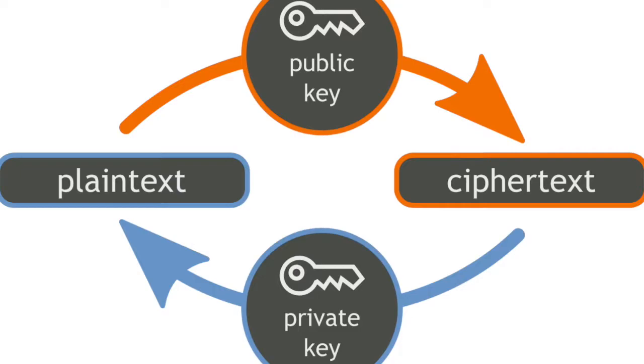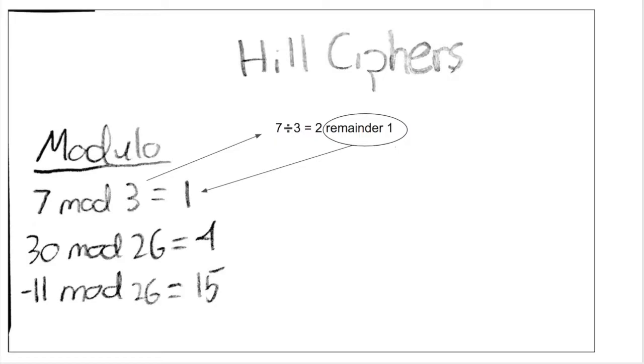The modulo operation is crucial to Hill Ciphers as it is performed after almost every step. The easiest way to think about modulo is that it is the remainder after dividing something. So modulo 7 mod 3 would be 1, because 7 can be divided by 3 a total of 2 times, leaving a remainder of 1.